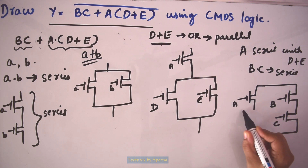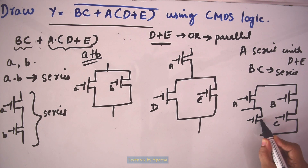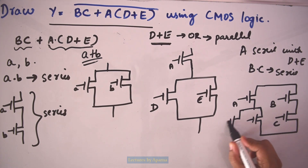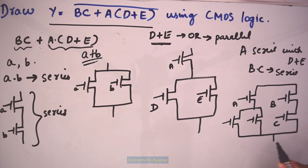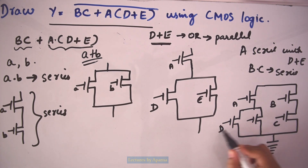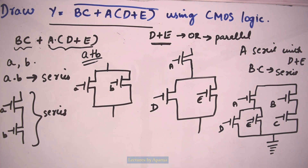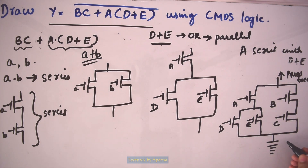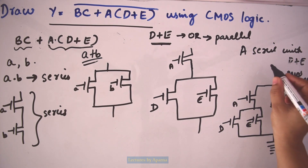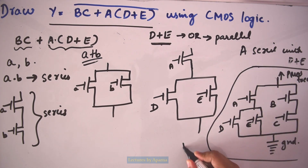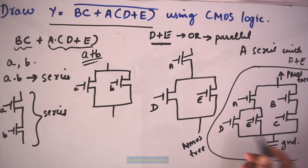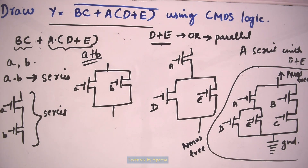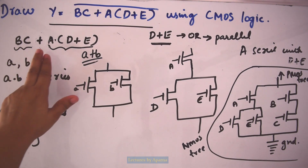In the NMOS tree, A is in parallel with the series combination of D and E. This portion is connected to ground. Input D and input E are at the bottom, and the top portion is connected to the PMOS tree. This is the NMOS tree, which implements the function BC plus A into (D plus E).